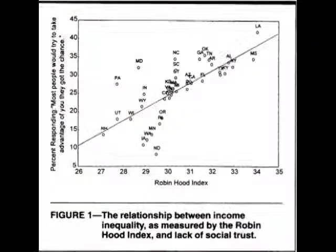Kawachi was attempting to measure civic engagement and its relationship to income inequality as measured by the Robin Hood Index. The Robin Hood Index is located on the x-axis and represents income inequality, with a low Robin Hood Index indicating relatively equal income distribution and a high Robin Hood Index indicating a wide income gap. The y-axis represents Kawachi's measurement of civic engagement and trust — percent responding that most people would try to take advantage of you if they got the chance.